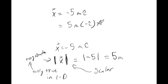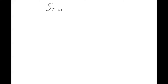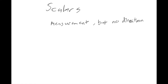Scalars in physics are basically everything you measure that isn't a vector — just some measurement, but no direction. An example from what we've already seen is mass. Mass is a scalar. If I tell you that something has a mass of 10 kilograms, I don't say it has 10 kilograms in the x direction. Or, as we just saw, if we take the magnitude of a vector, we also get a scalar.